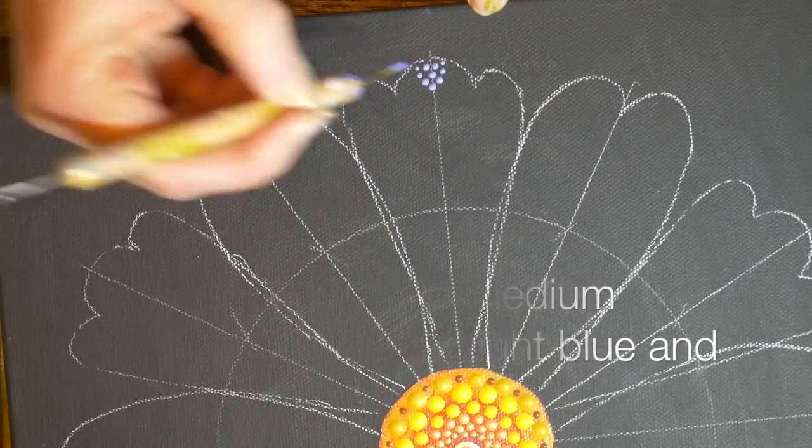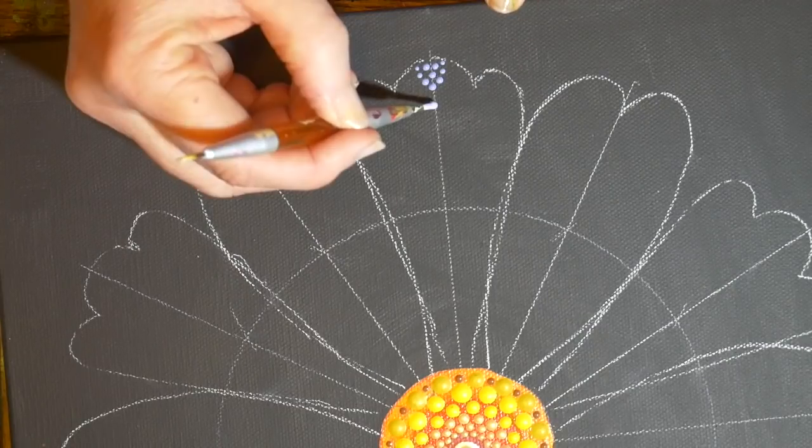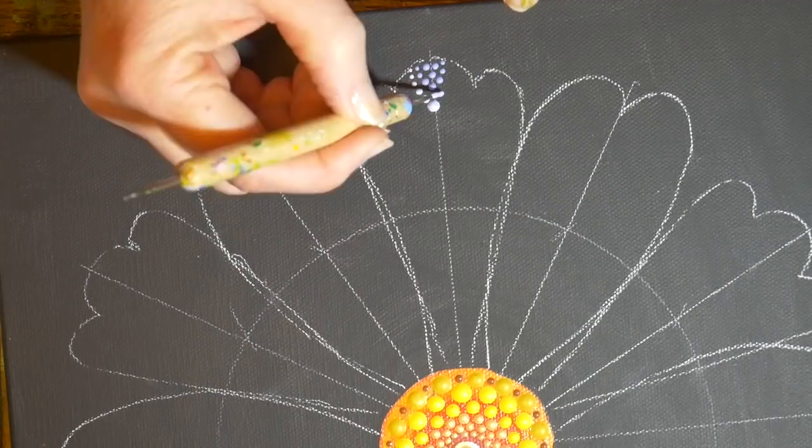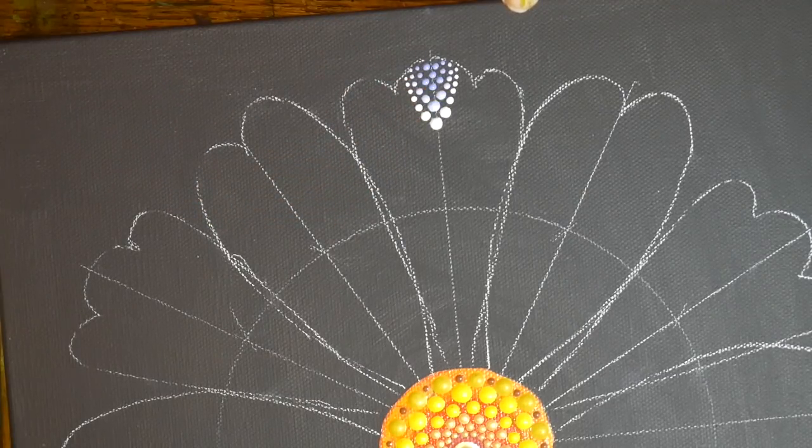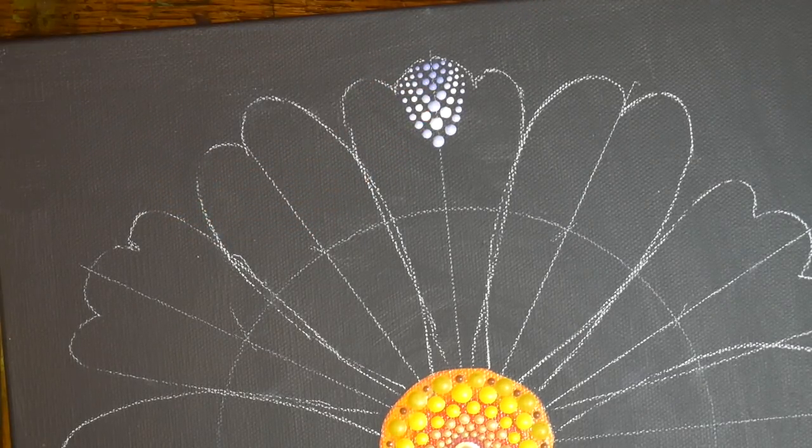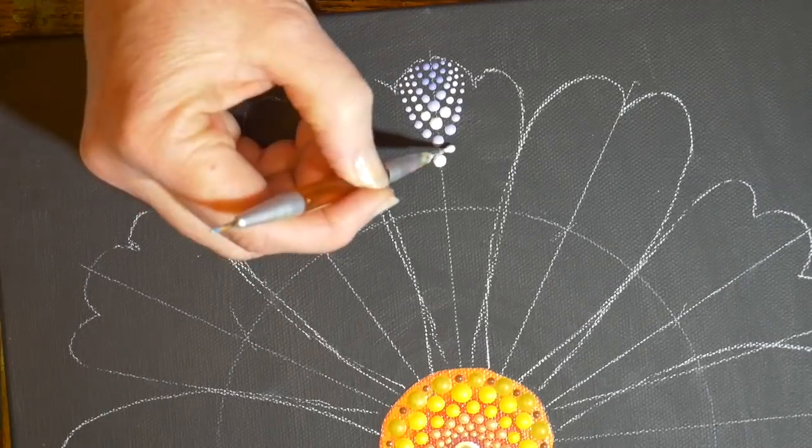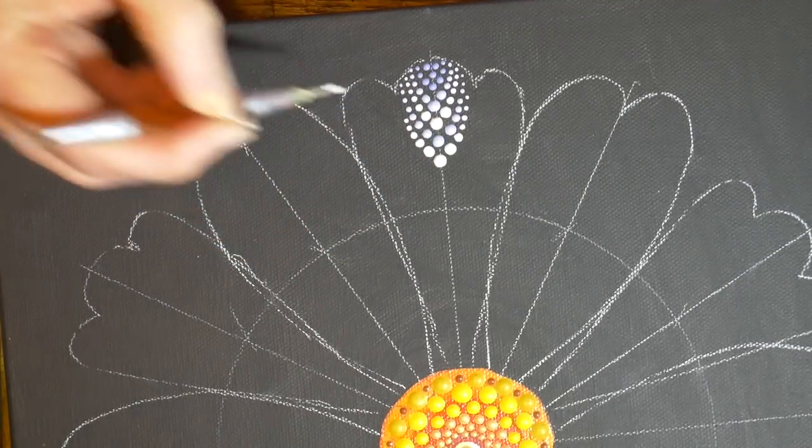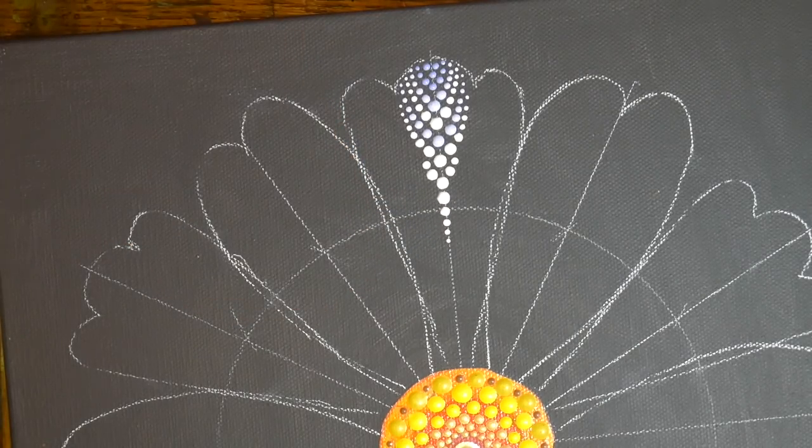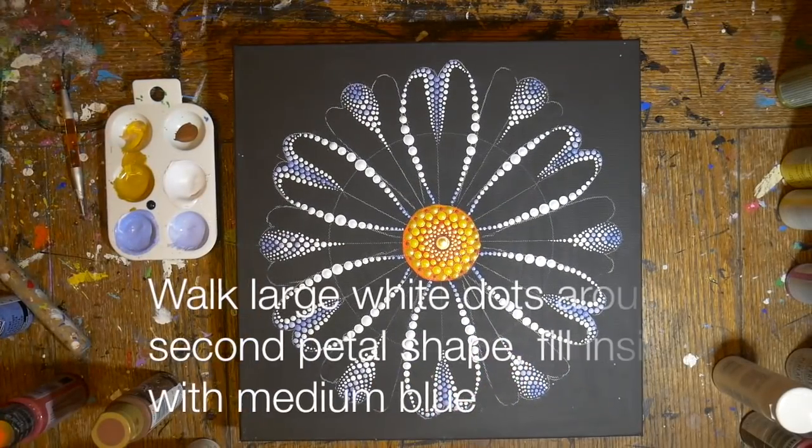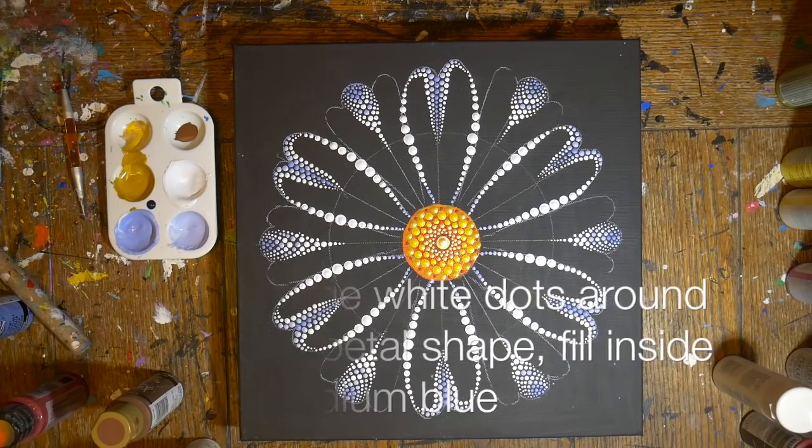Normally when I'm doing any mandala work I work from the center out, so this was different for me. I decided to work from the outside in once I got to this point because I really had no idea where it was gonna go or what I was gonna do. I just knew I wanted it to kind of look like a daisy and kind of look like a dragonfly at the same time.